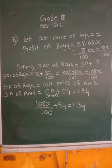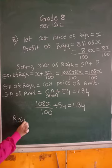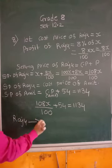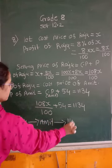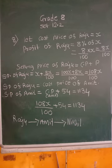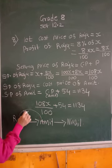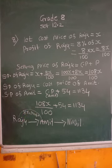Now see students, bicycle is moving from first Raju. Raju has given it to Amit and Amit has sold it to Nikhil. This is the flow of the bicycle. Now, when Raju sold to Amit, he has earned 8% profit.